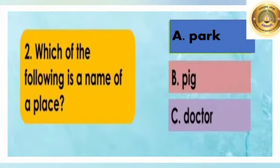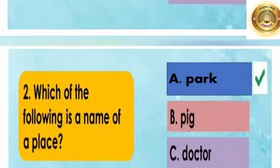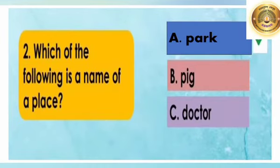Which of the following is the name of a place? A. Park, B. Pig, C. Doctor. Correct. A. Park.